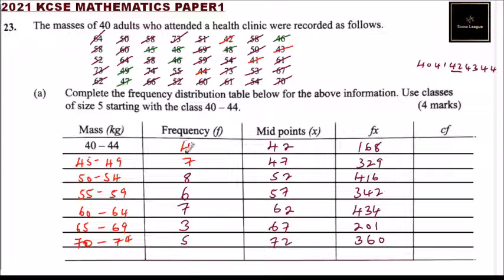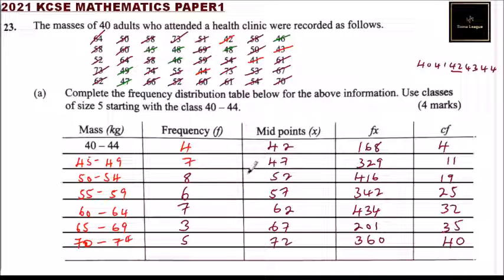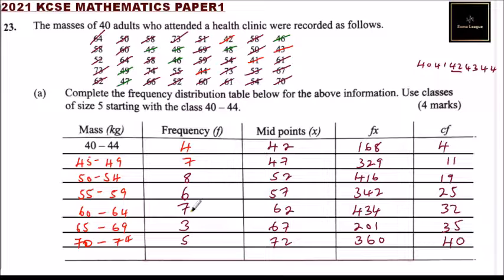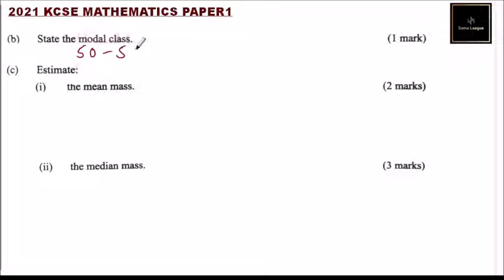For cumulative frequency we add the frequencies progressively: 4, then 4+7=11, 11+8=19, 19+6=25, 25+7=32, 32+3=35, 35+5=40. The modal class is the class with the highest frequency. Looking at the frequency column, the highest frequency is 8, so the modal class is 50 to 54.